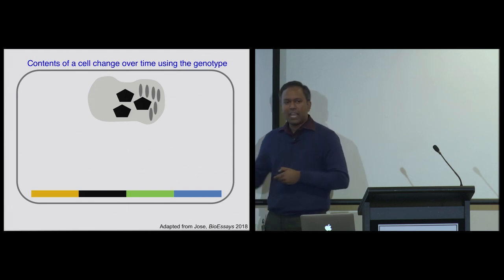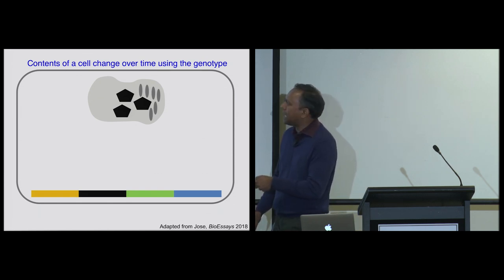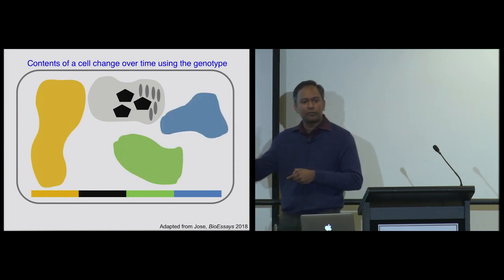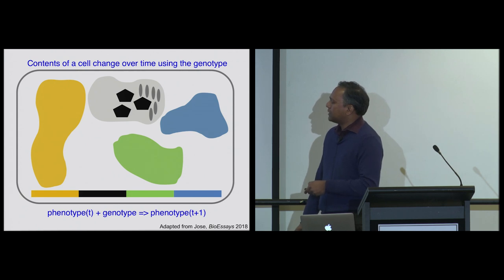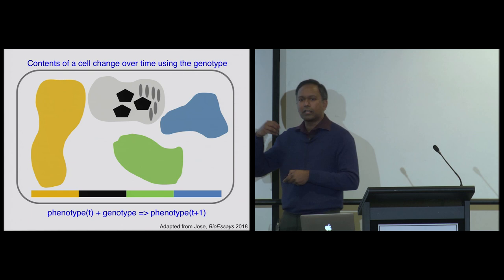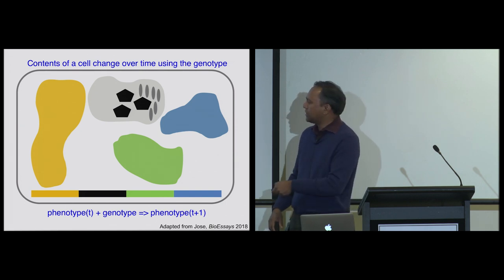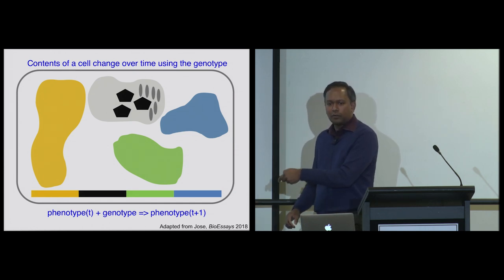But if you think about this process, every single step in that process happened under the guidance of other molecules that were already there. So if you just had this sequence of DNA inside a bag, you'll get nothing. The DNA will be inert just sitting in the bag. So what you need is all the other things that were already there. Now what that means is you will get the phenotype at any one time based on the genotype and the phenotype at a previous time. Which means just figuring out its genotype gives you nothing. You cannot derive the phenotype from the genotype of any cell.